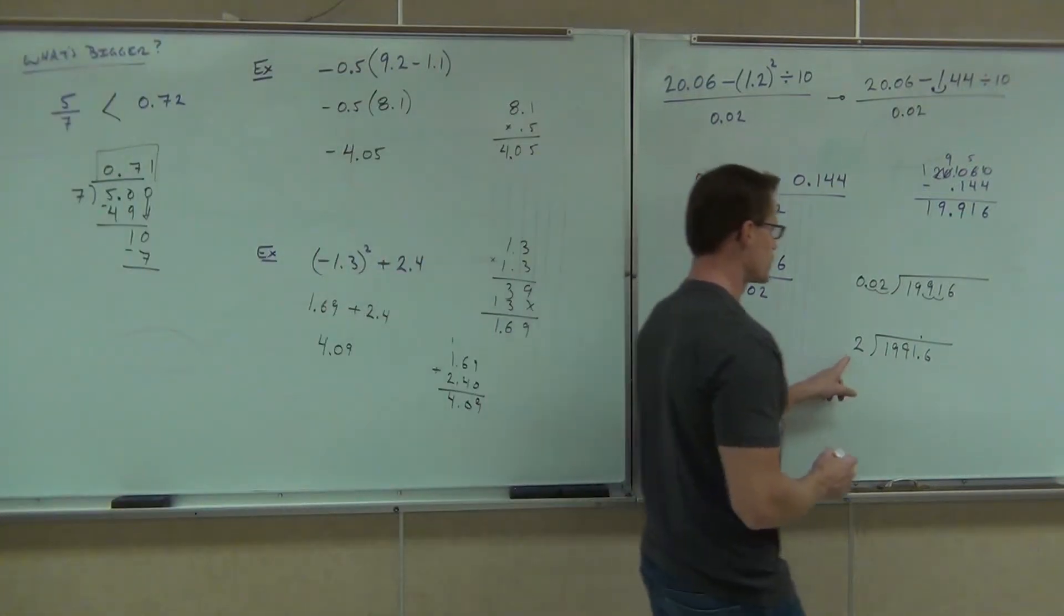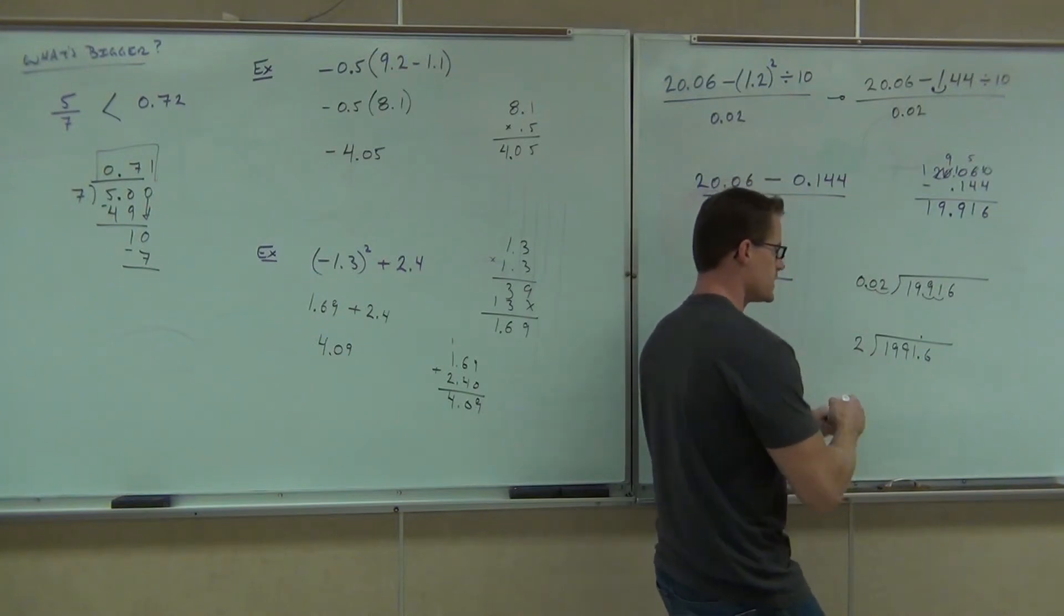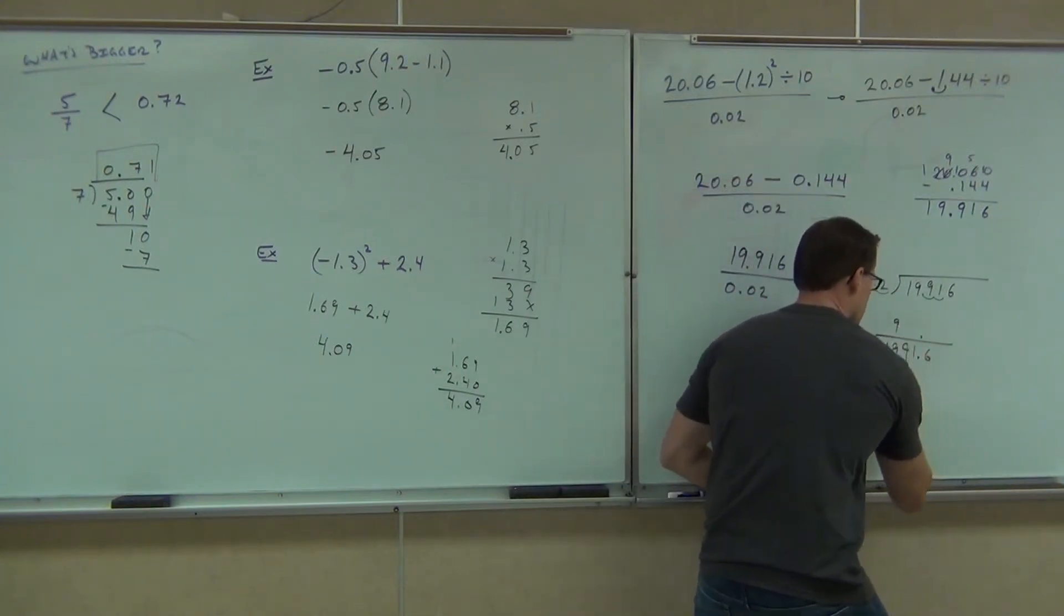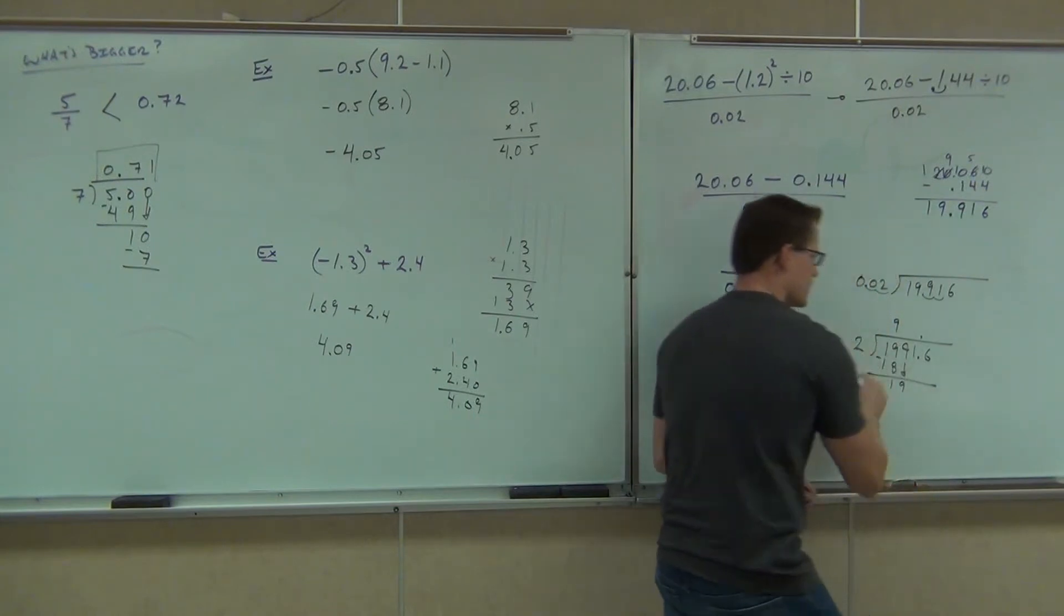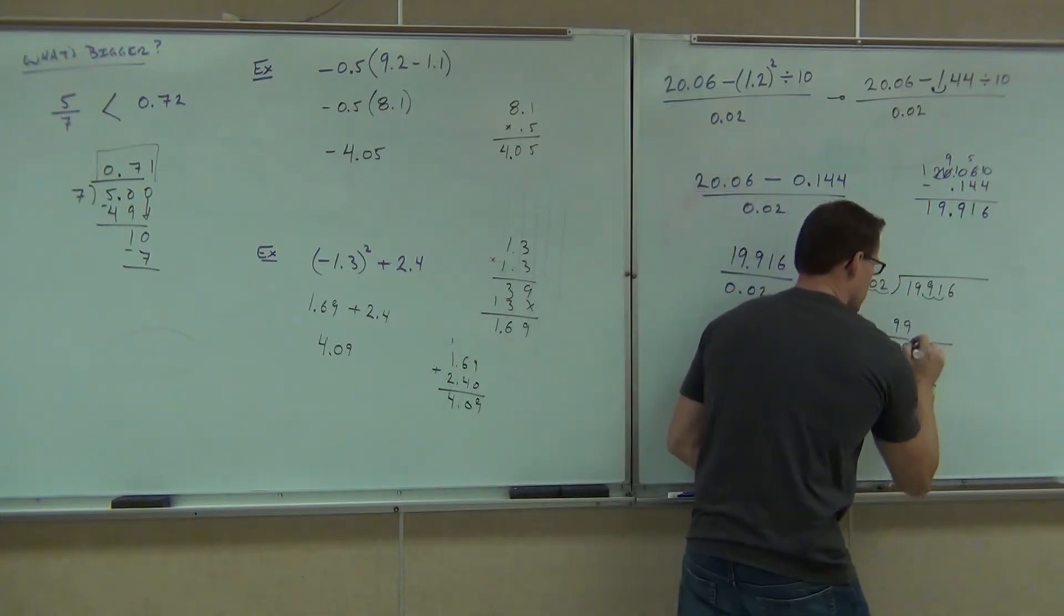Two doesn't go into one, but it does go into 19, looks like nine times. I get 18, subtract and get 1. Bring down that nine, again I get nine.